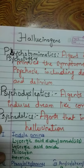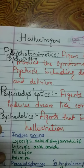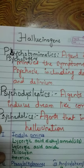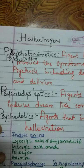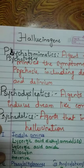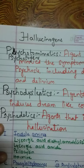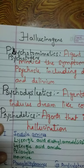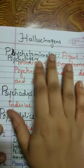Today's topic is hallucinogens. As the name says, hallucinogens are agents that produce hallucinations. We have various synonyms for hallucinogens: psychomimetics, psychotogens, psychodysleptics, and psychedelics — all meaning one and the same thing.